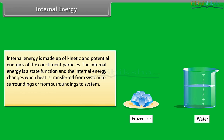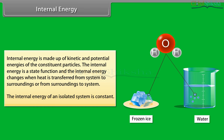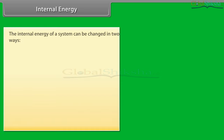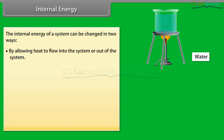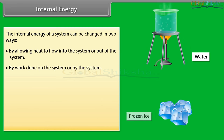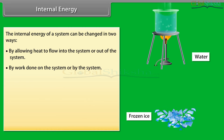Internal energy is made up of kinetic and potential energies of the constituent particles. It is a state function, and the internal energy changes when heat is transferred from system to surroundings or from surroundings to system. The internal energy of an isolated system is constant. The internal energy of a system can be changed in two ways: by allowing heat to flow into or out of the system, or by work done on or by the system.